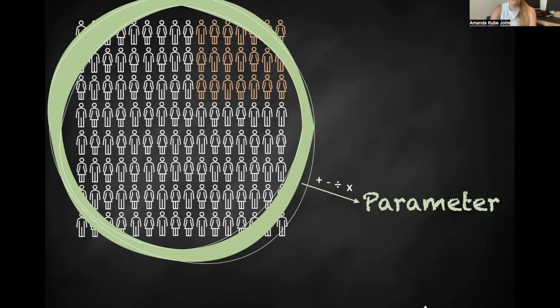Now, the process of understanding a parameter based on a statistic is called statistical inference. You're inferring something about your population parameter based on the statistic that you have. Now, sometimes it gets a little bit confusing whether a statistic goes with a sample or with a population. You can remember this by looking at the first letter. So a statistic is with a sample, both s's, and a parameter is with the population, both p's.